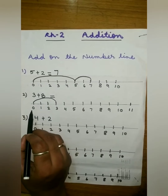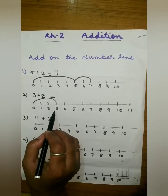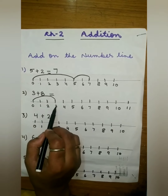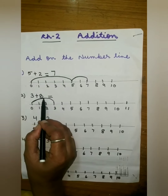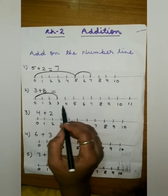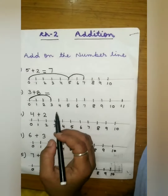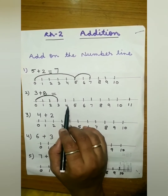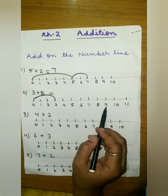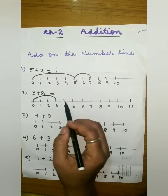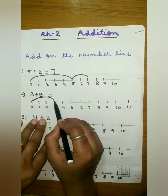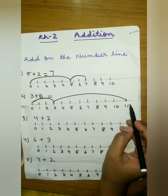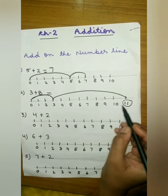The next example is 3 plus 8. On the number line, count from zero to three: one, two, three — jump on three. Then after three, count eight numbers: one, two, three, four, five, six, seven, eight — jump from three to eleven. So the answer will be eleven.